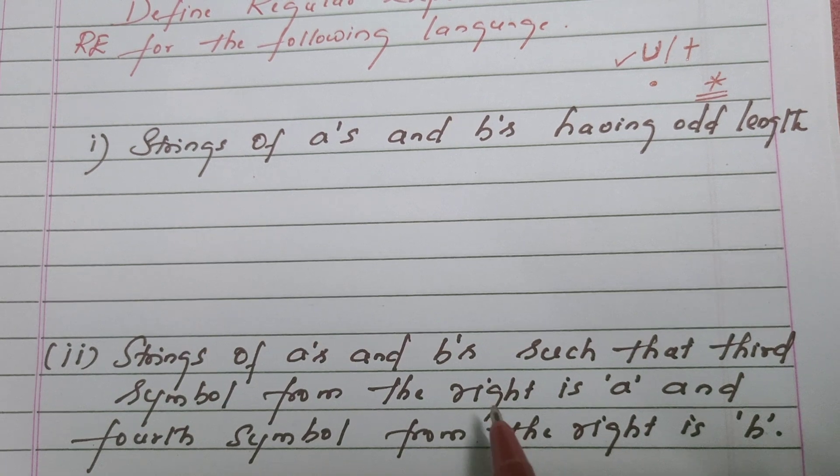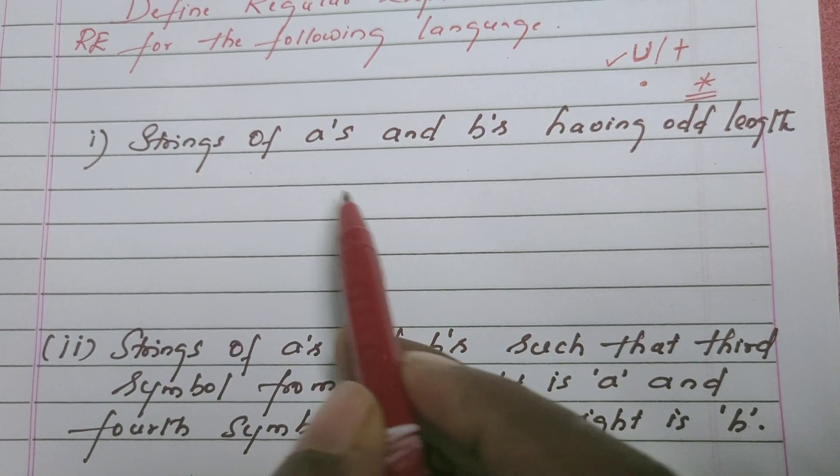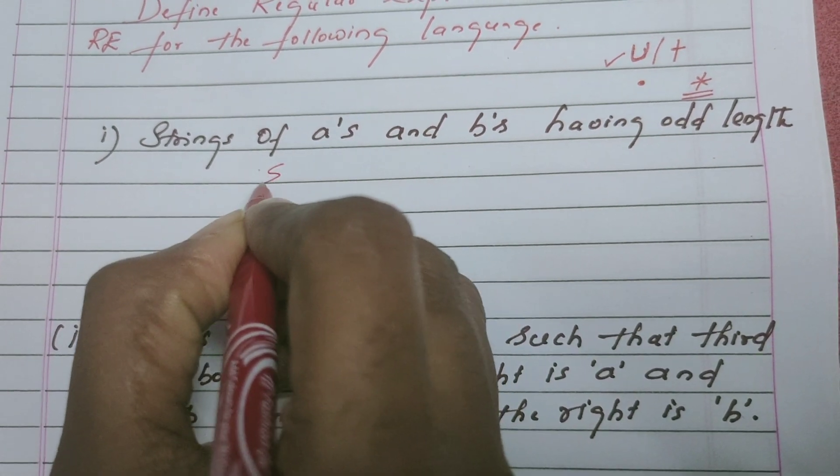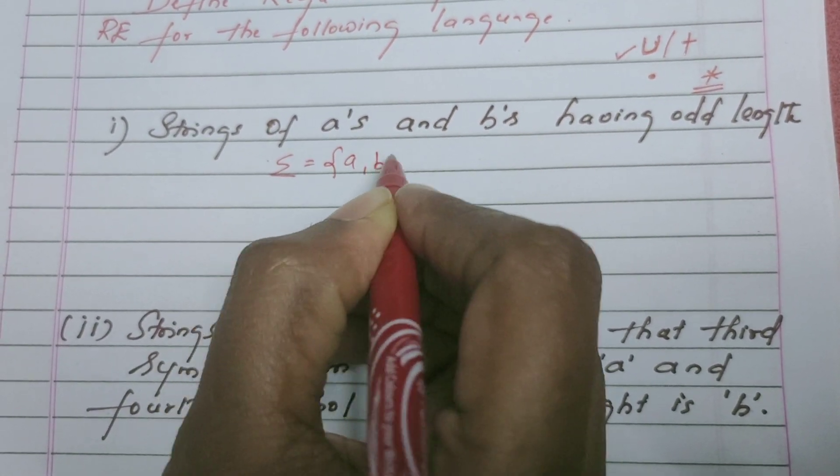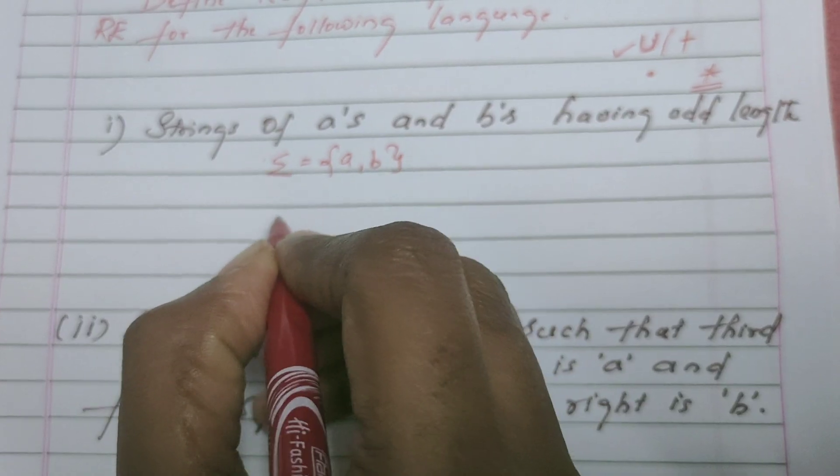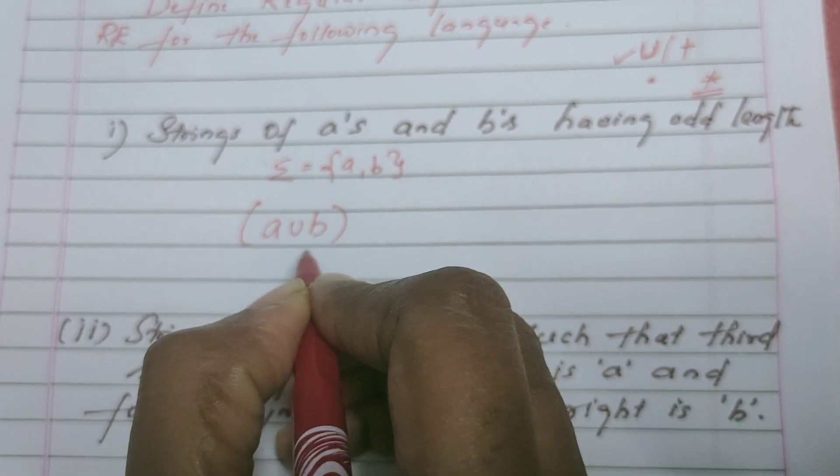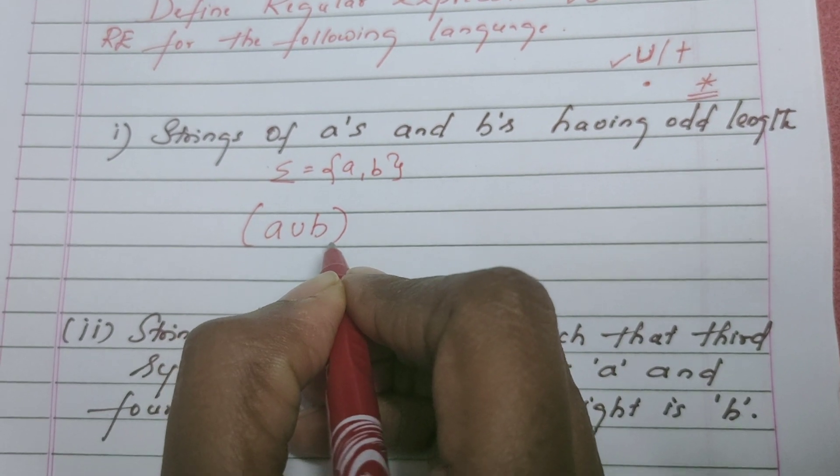So let us get back to this question: strings of A's and B's having odd length. Sigma is equal to A and B here. So A union B is a regular expression which provides string of length 1, either A or B. If I concatenate one more A union B, now put together it is producing